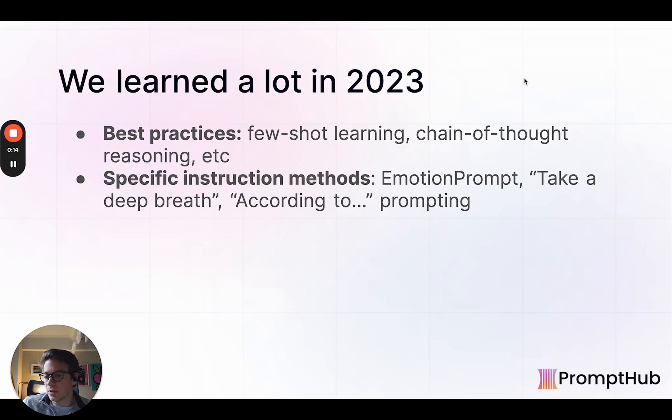So looking back briefly, 2023 was obviously a huge year for AI in general with the launch of ChatGPT. It was actually at the end of 2022, but it was really in 2023 where things started to mature. We're seeing a lot of best practices developed in prompt engineering. We have few-shot learning, chain-of-thought reasoning. We're learning a lot more of how to actually get better responses from LLMs, from specific instruction methods like EmotionPrompt, this take a deep breath chain-of-thought reasoning. There's a lot that has emerged over the last year.